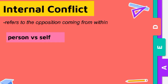Next is internal conflict. It refers to the opposition coming from within. This is also known as character vs. self, which involves morals and values. It requires a person's decision when challenged by conscience and needing to choose between right and wrong. For example, when a student is torn between watching a Korean drama or completing their homework.